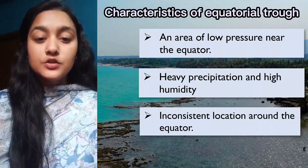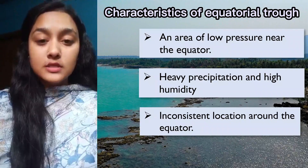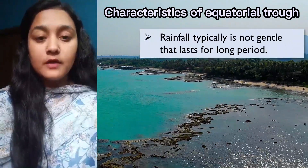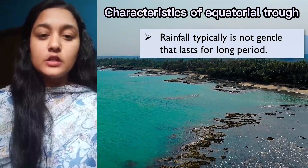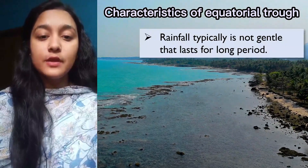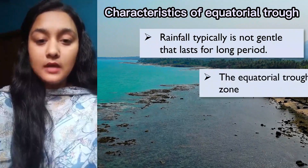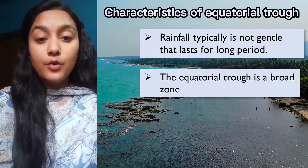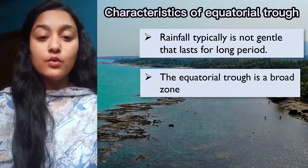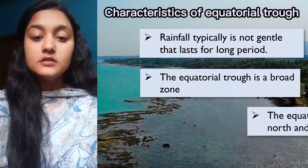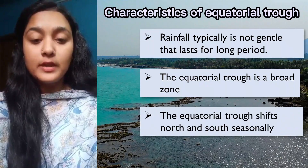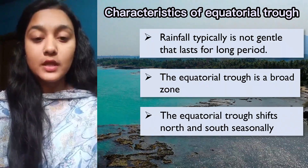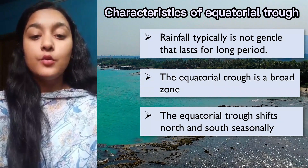Location: The equatorial trough is characterized by inconsistent locations around the equator. Storm trough: The rainfall in the equatorial trough is not gentle rainfall that lasts for a long period. Broad zone: The equatorial trough has a broad zone that extends across the Earth's surface. Seasonal movement: The equatorial trough shifts north and south seasonally in response to the movement of the sun.